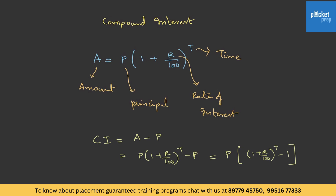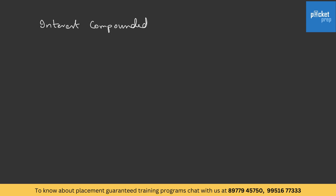One more important point to note: the above formula is applicable only when interest is compounded yearly, meaning interest is calculated year to year. But it is not always the case in questions — it could be half-yearly, quarterly, or monthly. So let's also learn what the formula will be if the interest is compounded half-yearly.